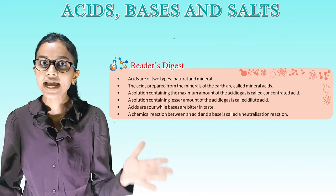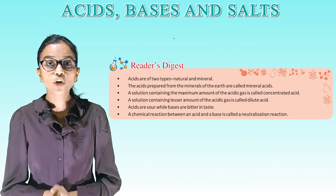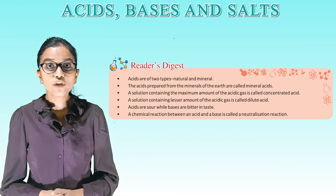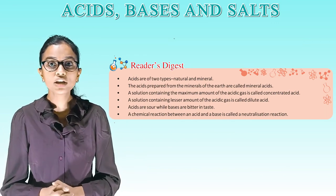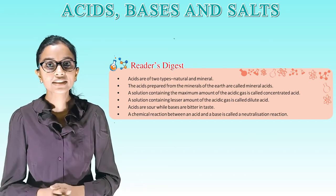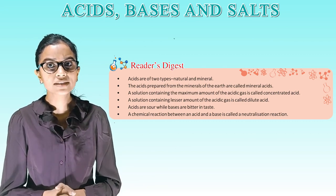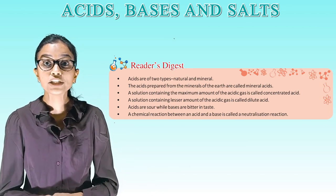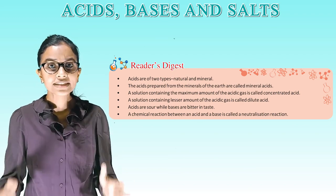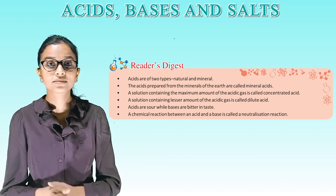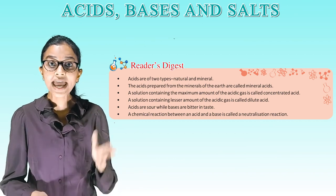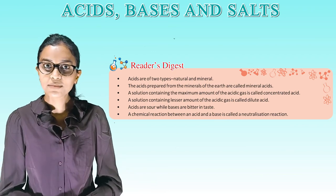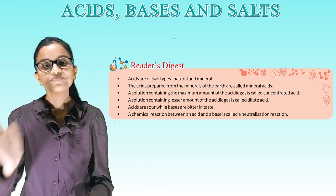Reader's digest recap: Acids are of two types — natural and mineral. The acids prepared from minerals of the earth are called mineral acids. A solution containing the maximum amount of acidic gas is called concentrated acid; one with a lesser amount is called dilute acid. Acids are sour while bases are bitter in taste. A chemical reaction between an acid and a base is called a neutralization reaction. Students, it's time to take your leave. We'll meet in the next class. Bye.